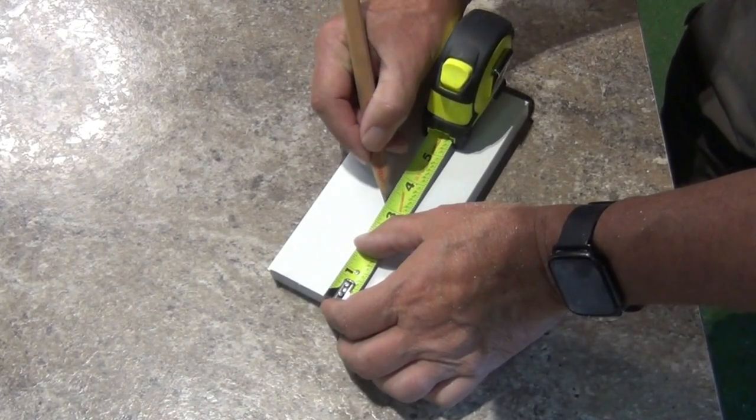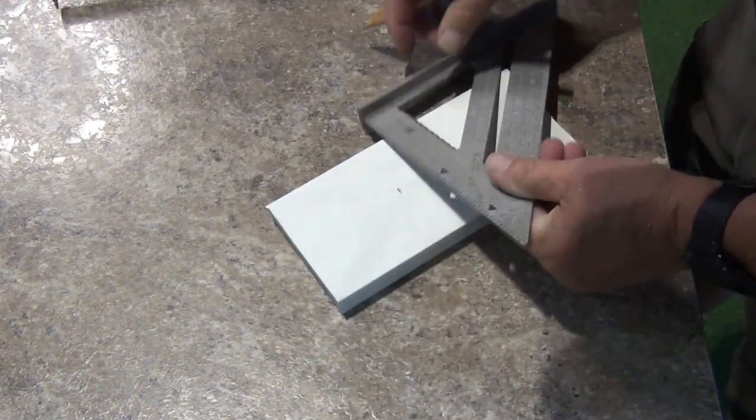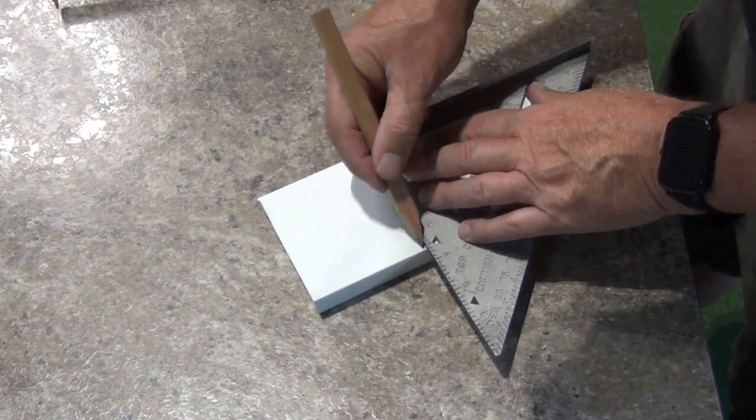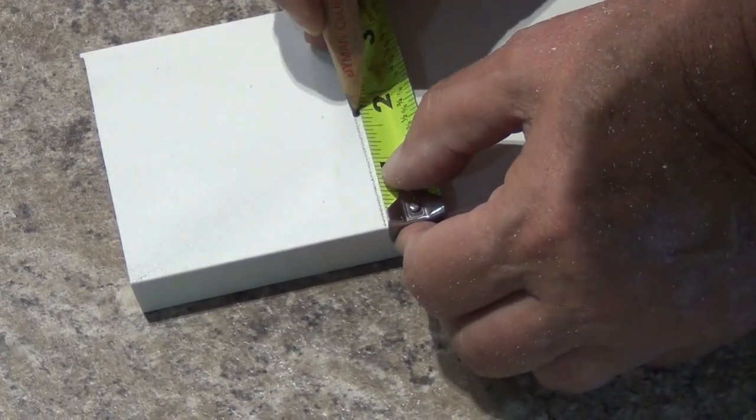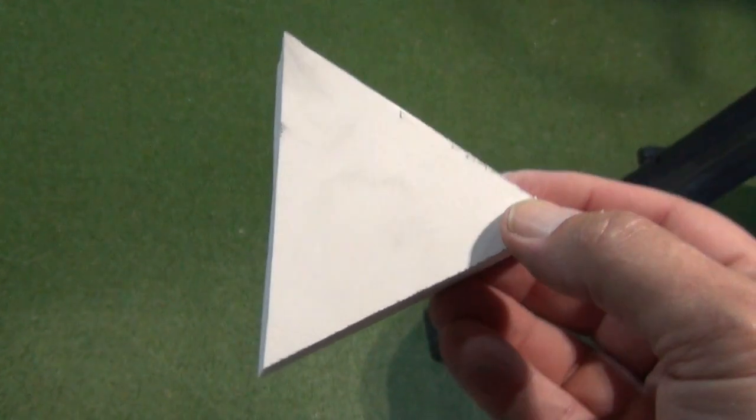I'm going to start by cutting an equilateral triangle from the three and a half inch board. To lay this out, measure up three and a half inches and use a square to draw a line. Now find the exact center of this line, then draw a diagonal from each corner. Use the saw to cut this triangle out.